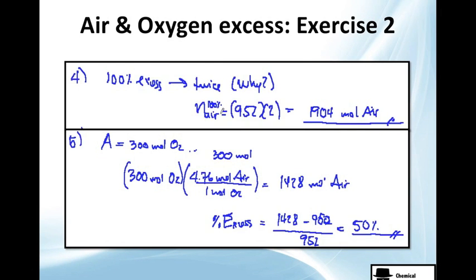Now they tell you you have 100% excess. This is technically twice. Why? Please, hopefully you get to know that 100% implies twice. So we only multiply by 2. And we get 1,904 mols of air.